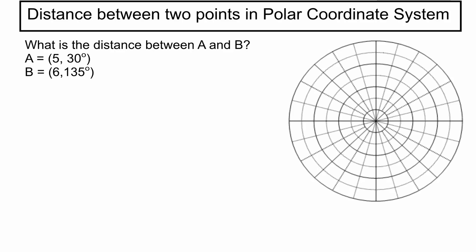So we're going to start by graphing point A. That's 5, 30 degrees. So 30 degrees is right there at that tick mark. Then we're going to go out 5. 1, 2, 3, 4, 5. There we go. So this is point A.